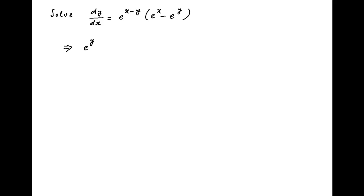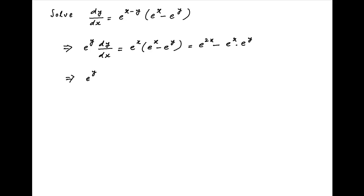We start by multiplying both sides of the given differential equation with e raised to the power y. Therefore, we get e raised to the power y times dy upon dx is equal to e raised to the power x times, in brackets, e raised to the power x minus e raised to the power y, which is equal to e raised to the power 2x minus e raised to the power x times e raised to the power y. This can be rearranged as e raised to the power y times dy upon dx plus e raised to the power x times e raised to the power y is equal to e raised to the power 2x.